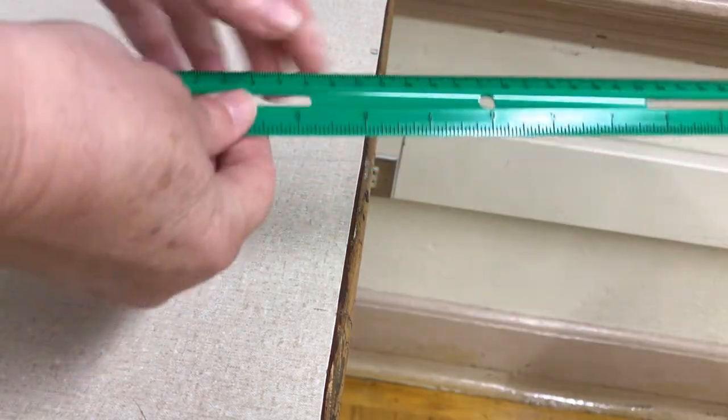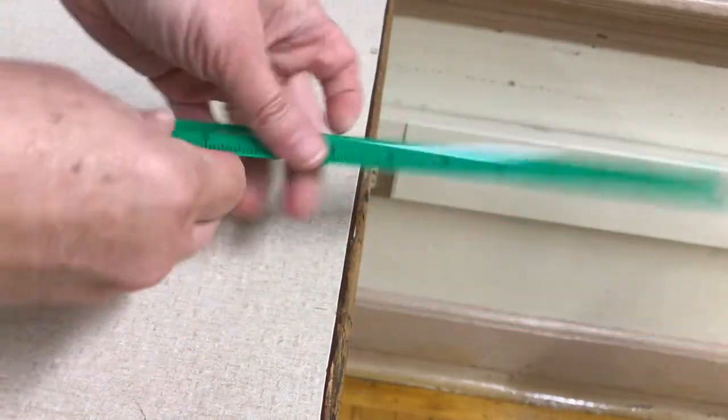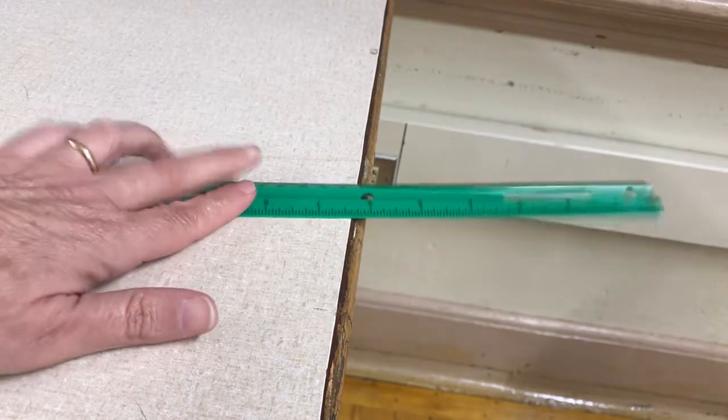We cannot move our arms fast enough back and forth to make them make sound, but there are other things we can make vibrate. For example, a ruler.